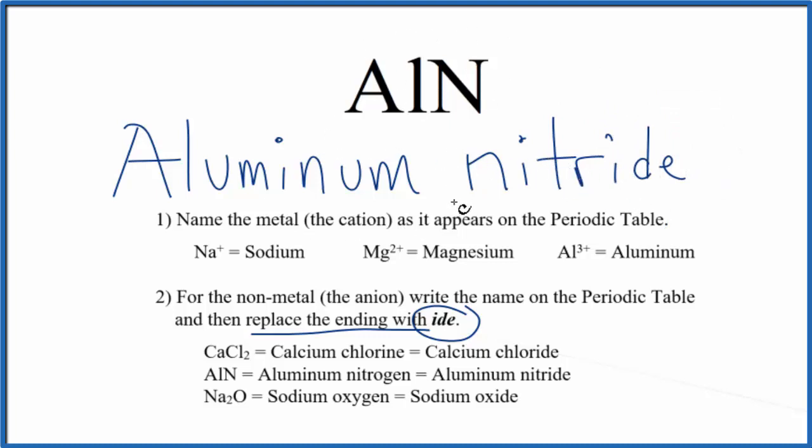If you are given the name and asked to write the formula, you'd have to realize that aluminum has a 3+ ionic charge when it forms bonds. Nitride, the nitrogen, forms 3- ions when it bonds. 3+, 3-. These balance out. They give us a net charge of zero, so the formula for aluminum nitride is AlN.